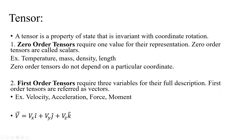Tensors could have different orders. Zero order tensors only require one variable for their full representation, and we refer to zero order tensors as scalars. Temperature, mass, density, and length are examples of zero order tensors or scalars — they only require one value. One feature of zero order tensors is that they do not depend on any particular coordinate, satisfying the tensor definition of invariance with coordinate rotation, but they go further: they do not depend on any coordinate at all.